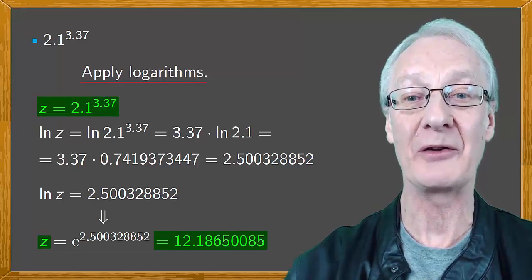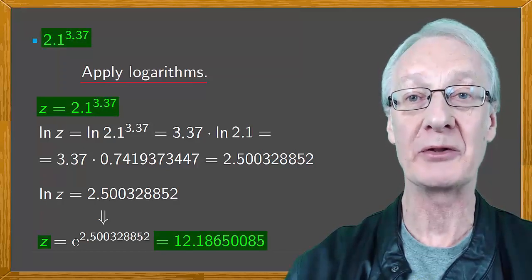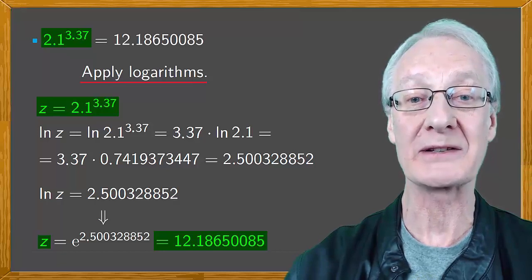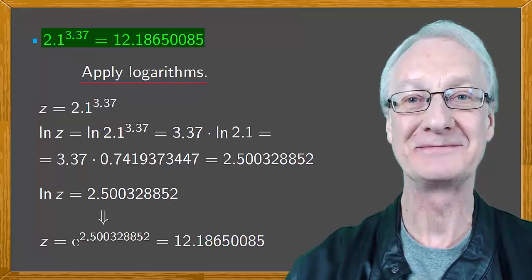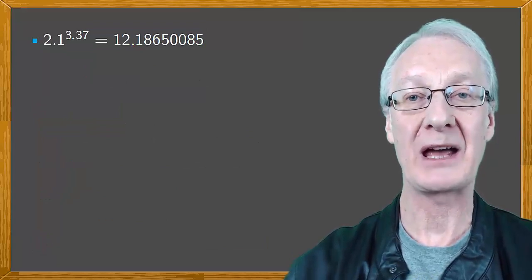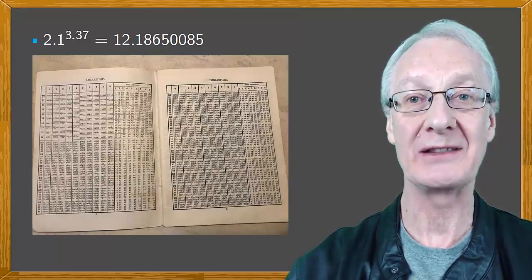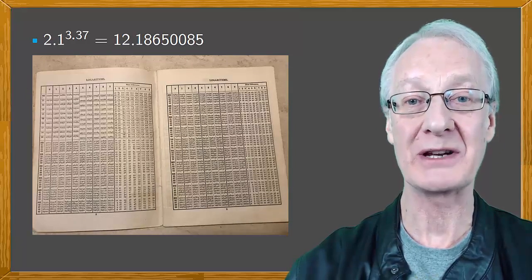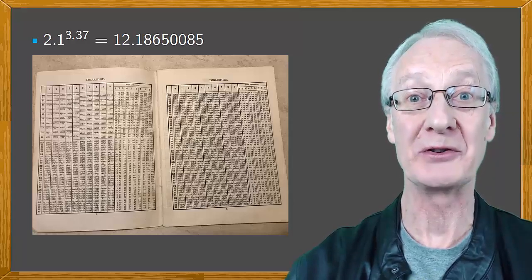Great. We figured out that 2.1 to the power 3.37 is 12.18650085. The calculation of the exponential in the past was done by the same log table, but in reverse — looking inside the table for the value in question, and seeing with what value the logarithm argument corresponded.